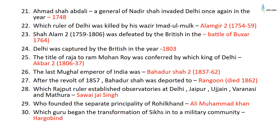Ahmed Shah Abdali, a general of Nadir Shah, invaded Delhi again in 1748. The ruler of Delhi killed by his Wazir Ahmad ul-Mulk was Alamgir II, who ruled from 1754 to 1759. Shah Alam II, ruling from 1759 to 1806, was defeated by the British in the Battle of Buxar in 1764. Delhi was captured by the British in 1803. The title of Raja to Ram Mohan Roy was conferred by Akbar II, who ruled from 1806 to 1837, so that Roy could go to England and plead on behalf of Akbar II.